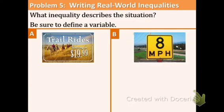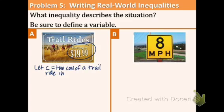Our last example. What inequality describes this situation? Be sure to define the variable. Trail ride starting at $19.99. Starting at. What does that mean? That means that the very cheapest it can be is $19.99. So we're going to use, let's use C. Let C equal cost of a trail ride in dollars. We're going to have C. We're going to have $19.99. What symbol goes in the middle? It's greater than or equal to because the smallest it can be is $19.99. And it can go more than that. That's what starting at means.